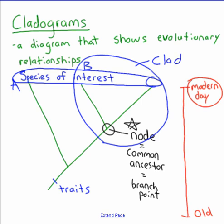A clade is all the organisms that come from a given common ancestor — everything that comes after a specific node. Traits can also be placed on a cladogram, such as 'has a nucleus,' 'has legs,' 'has hair,' or 'has a placenta,' which can help with reading and understanding the diagram.